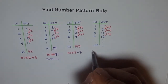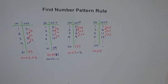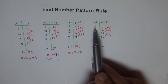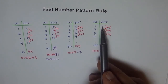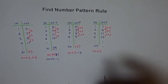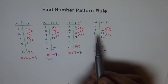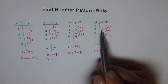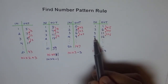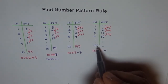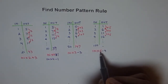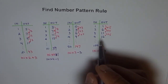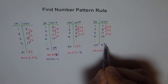So we have a formula: input times 5. Now we check plus or minus. 1 times 5 is 5, but we need 1 — take away 4. Let's verify: 2 times 5 is 10, take away 4 is 6 — it works! 4 times 5 is 20, take away 4 is 16 — it works! For input 100: 100 times 5 is 500, take away 4 is 496.